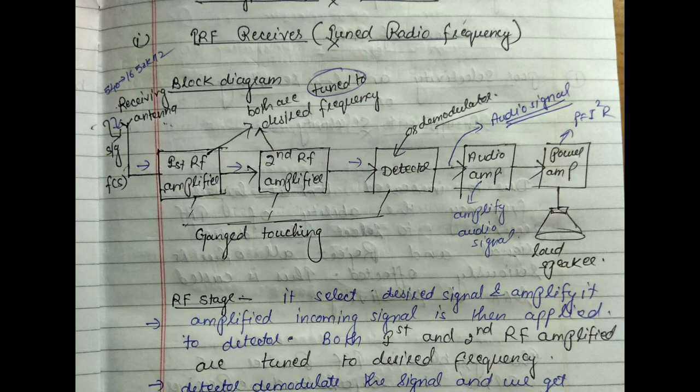Why is it placed between the antenna and the detector? So that it can increase the strength of the received signal before it is applied to the detector.